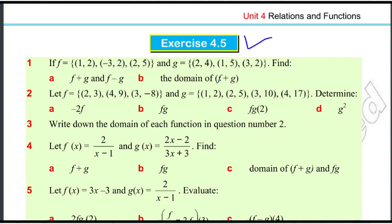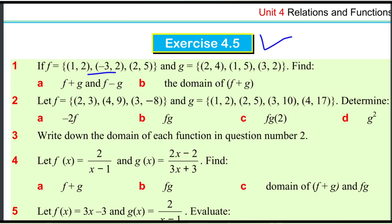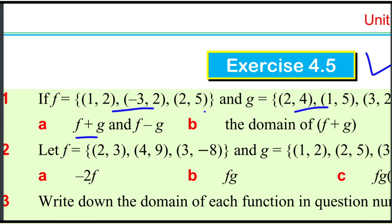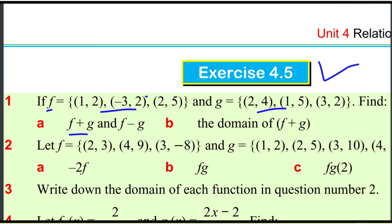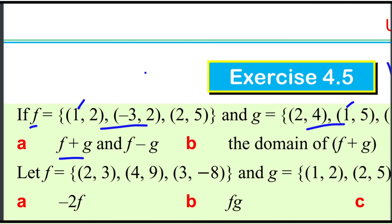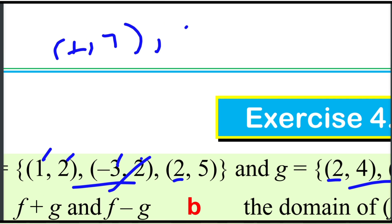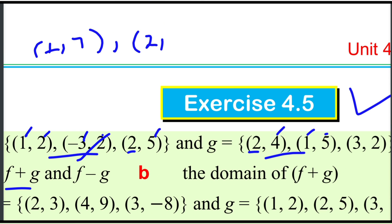This is exercise 4.5 on tonal functions. I will use F plus G. The first component is F plus G, the second component is F plus G 2 plus G. Then A 2, 2, 5, 2, 2, 3, and F plus G.